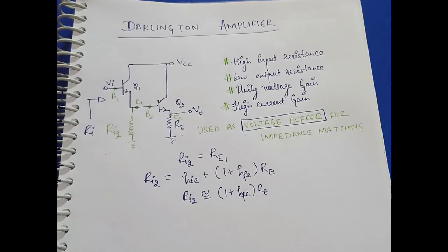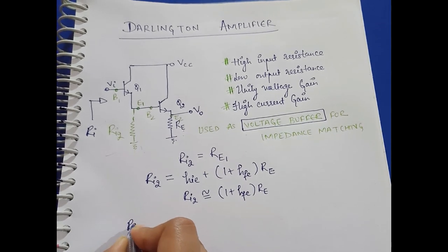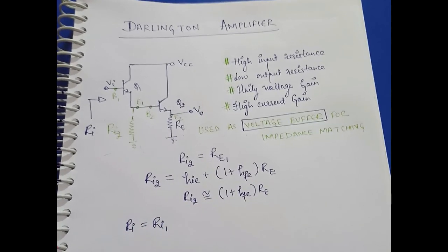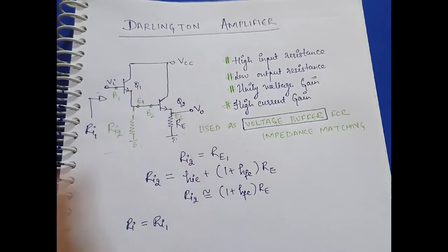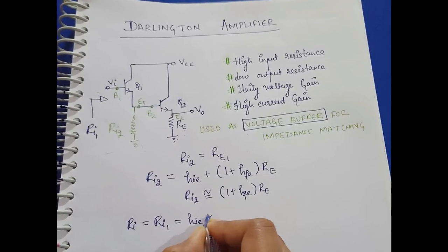The overall input resistance is basically the resistance of the first stage of the amplifier. The overall input resistance is the resistance of the input stage, which is the Q1 amplifier, and it is given by the same formula.